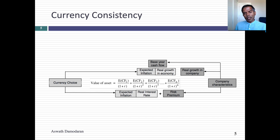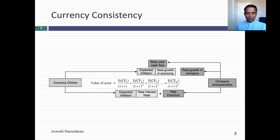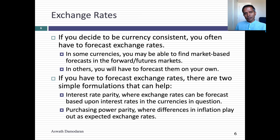What does currency invariant mean? If your company is undervalued in US dollars, it should stay undervalued in rupees. We'll come back and address this more specifically later on. But remember: when you pick a currency, you have to be consistent all the way through. If you do your analysis in Egyptian pounds, not only should your discount rate be in pounds, but your cash flows have to be in pounds. To convert your cash flows into pounds in future years, you need expected exchange rates. So let's talk about exchange rates.